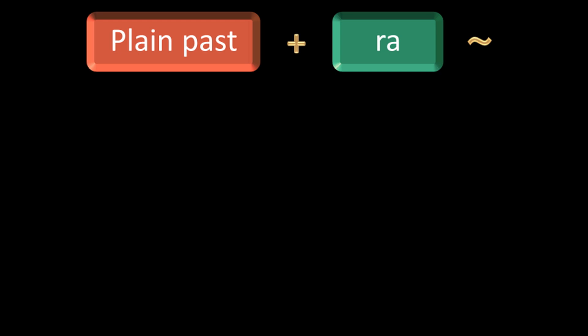Let me give you a few examples and the usage will become clear. The verb Arimasu means to exist or be there, and it is used in case of inanimate things. Its past tense is Arimashita and the plain past form is Atta. By adding Ra, we will get the condition Attara, which means if something is there.